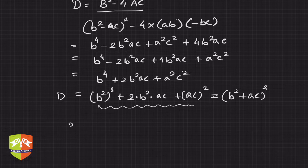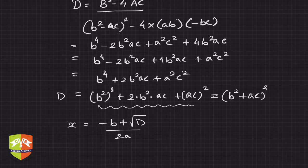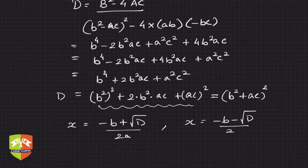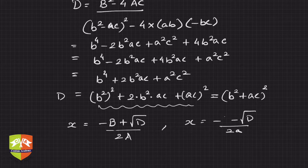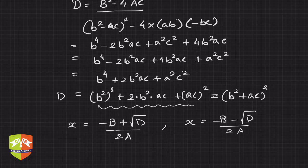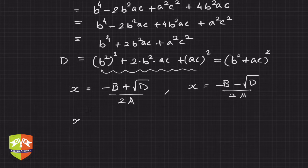Now what is the solution? x equals minus B plus root of D upon 2A, and x equals minus B minus root of D upon 2A — both are the solutions. Writing with capital letters: x equals minus capital B plus root D upon 2 capital A, and x equals minus capital B minus root D upon 2 capital A.